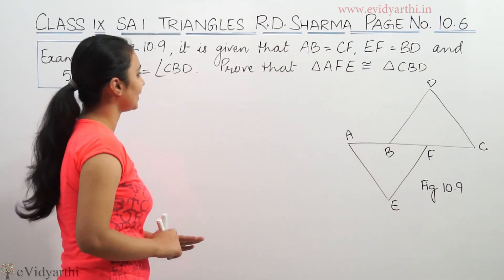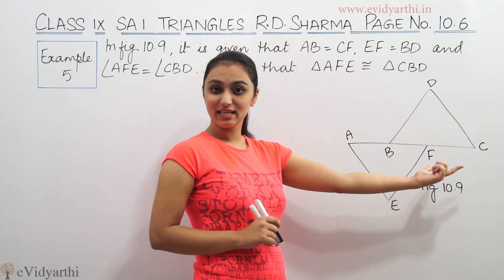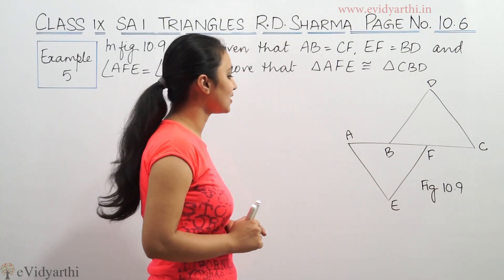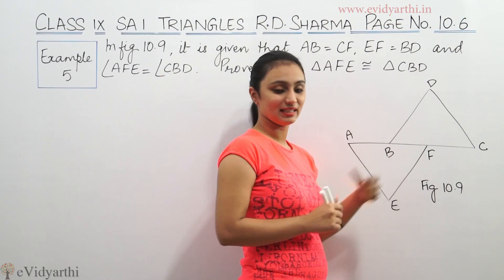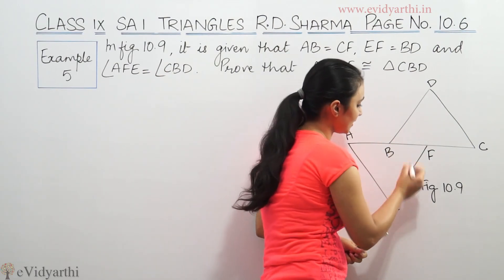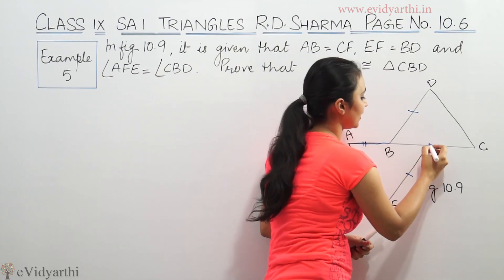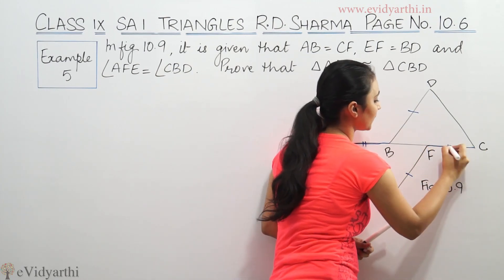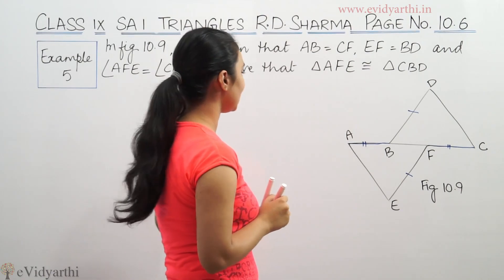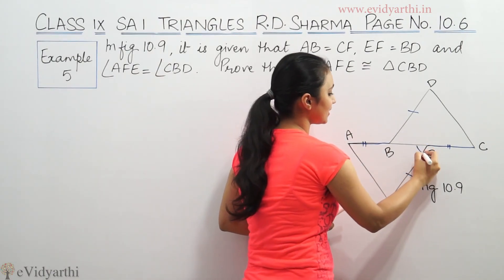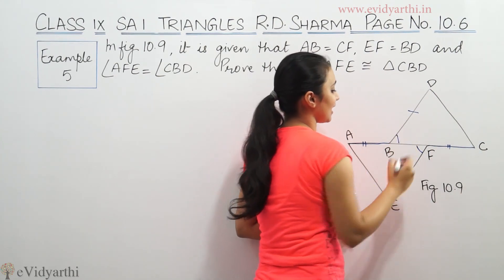In figure 10.9, it is given that AB is equal to CF and EF is equal to BD. This EF is equal to BD, and AB is equal to CF. This is angle AFE, and angle AFE is equal to angle CBD.